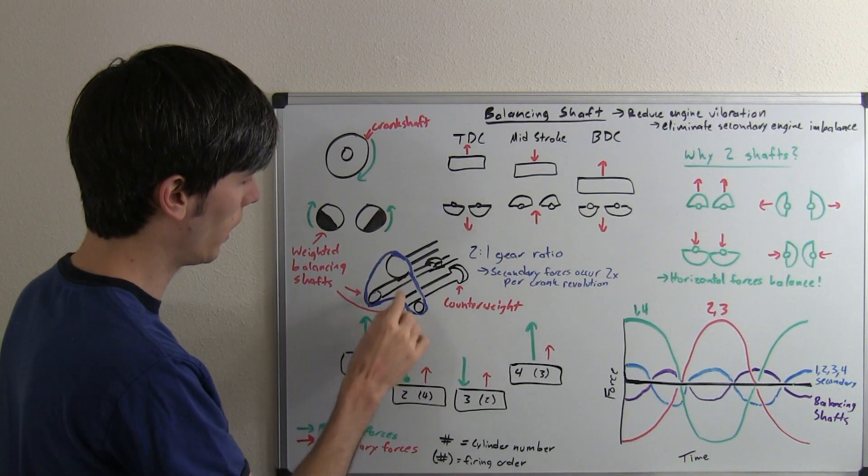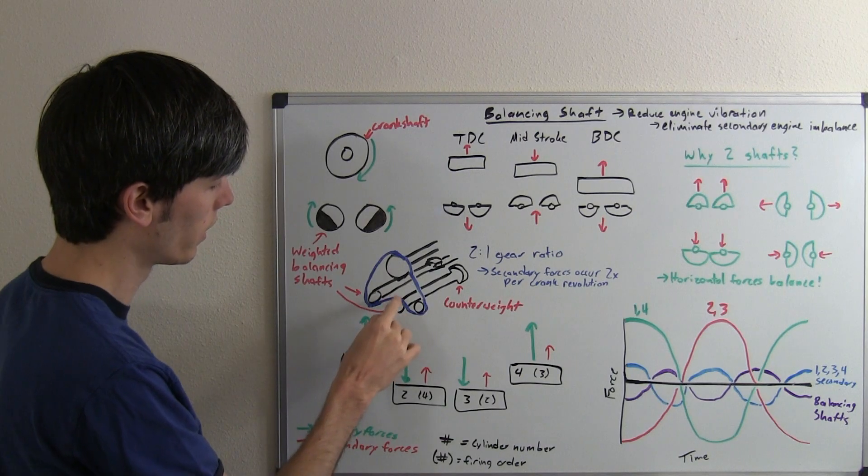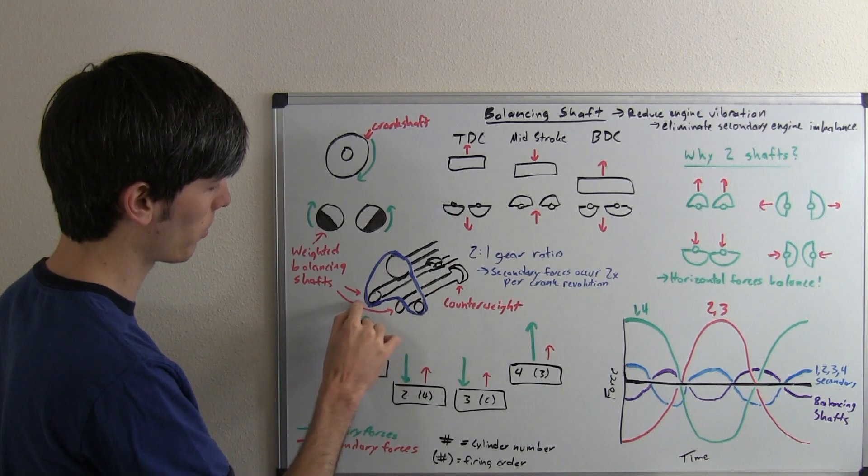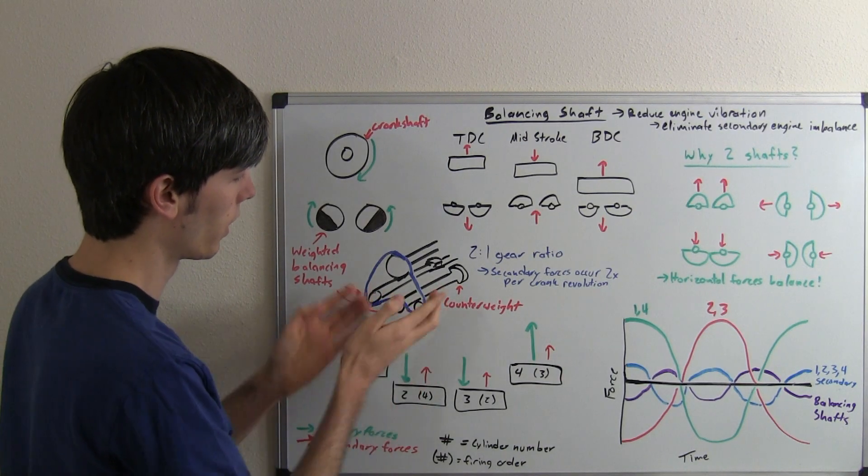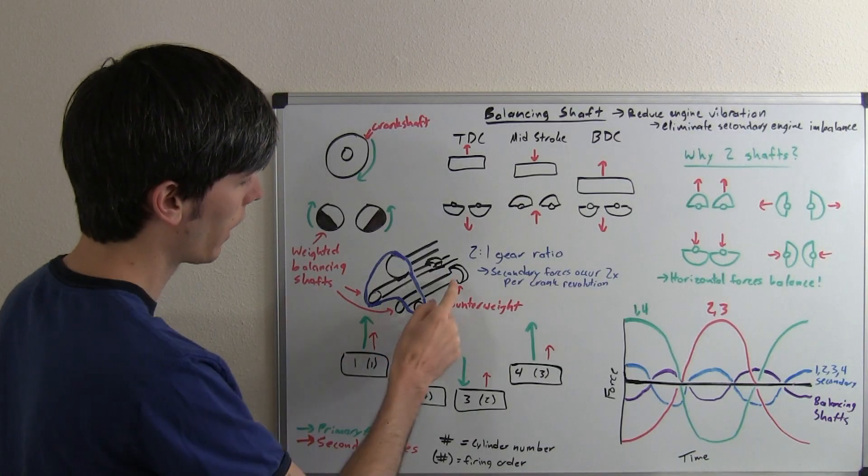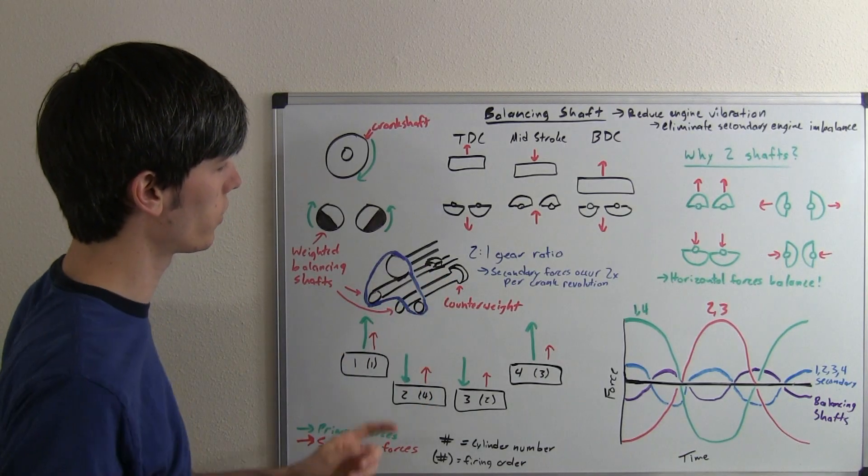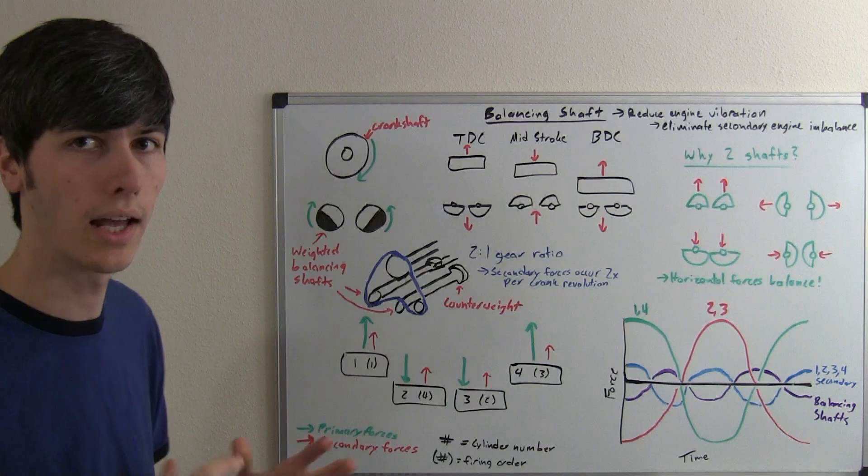You can do that by having a pulley wrap around one of the shafts and then wrap around the other in the opposite direction, so they'll rotate inward together. You've got counterweights on these shafts to counter out the secondary engine imbalances.